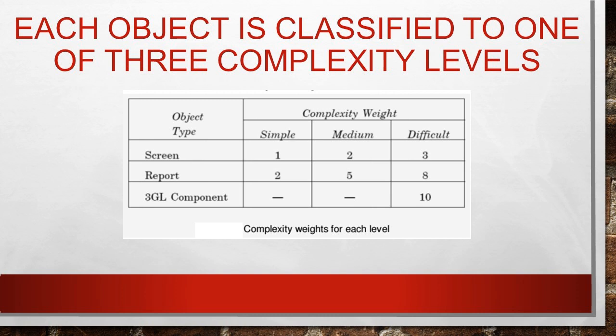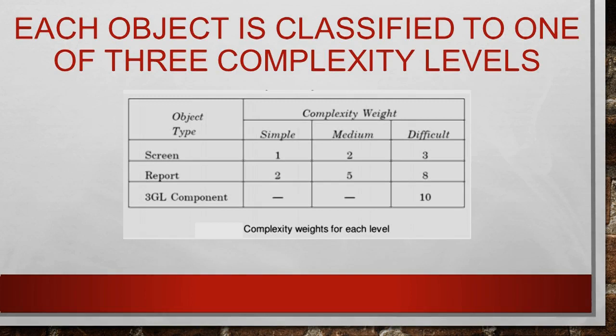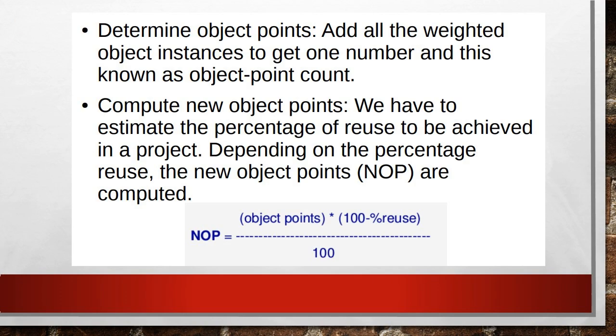Each object is classified to one of three complexity levels. The complexity weights can be simple, medium, and difficult. For different object types the complexity values are shown in the table.